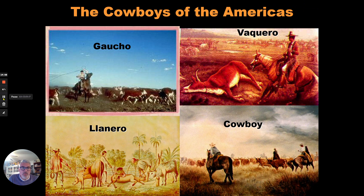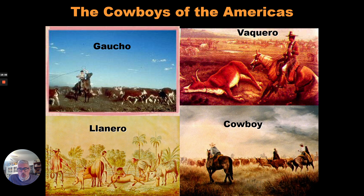Now let's continue with horses. Horses were valued by many groups of Native Americans and became a staple for Indians, cowboys, llaneros, gauchos, and vaqueros — all of these groups really appreciated the work that horses were doing. Because they were going to help explore all of America, carry heavy loads, and help farmers. When the horse was introduced in America, it became one of the best animals to have around.